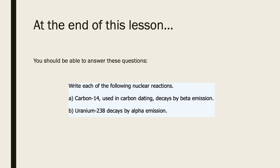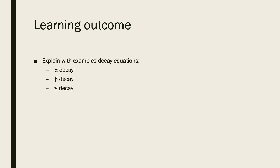At the end of this lesson, you should be able to answer these questions to achieve the learning outcomes. You should be able to write each of the following nuclear reactions: carbon-14 decays by beta emission, and uranium-238 decays by alpha emission. These questions are associated with the learning outcome to explain with examples the decay equations for alpha decay, beta decay, and gamma decay.